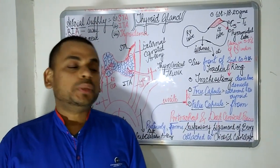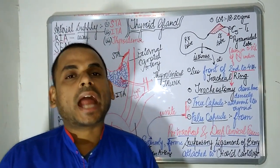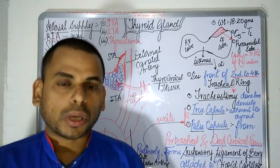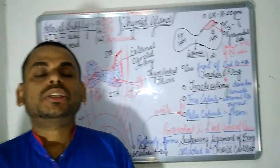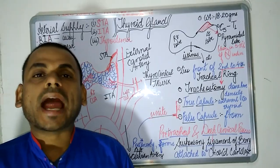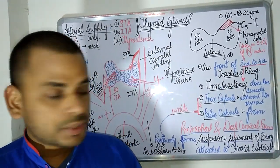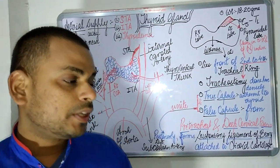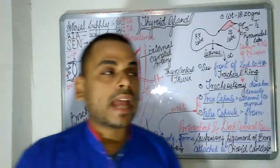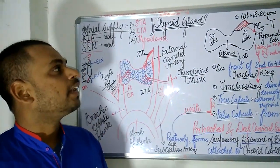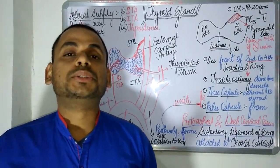Welcome to another session of the anatomy series. Today the topic of discussion is the thyroid gland — specifically, the gross anatomy of the thyroid gland.